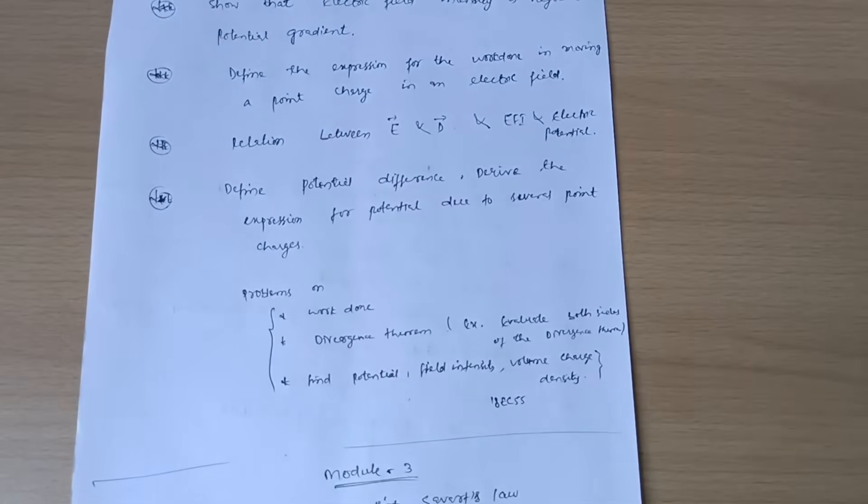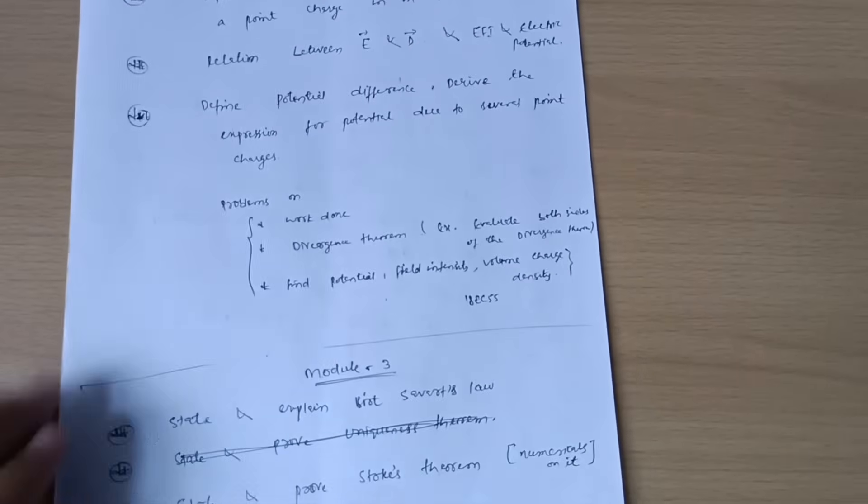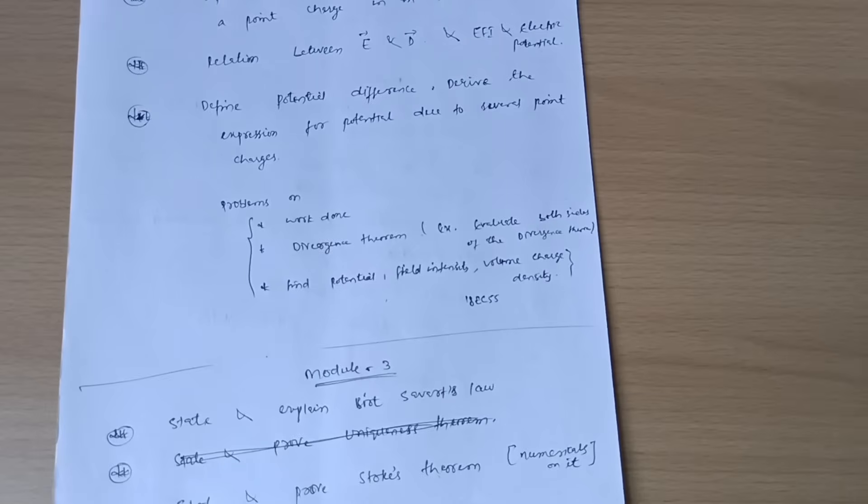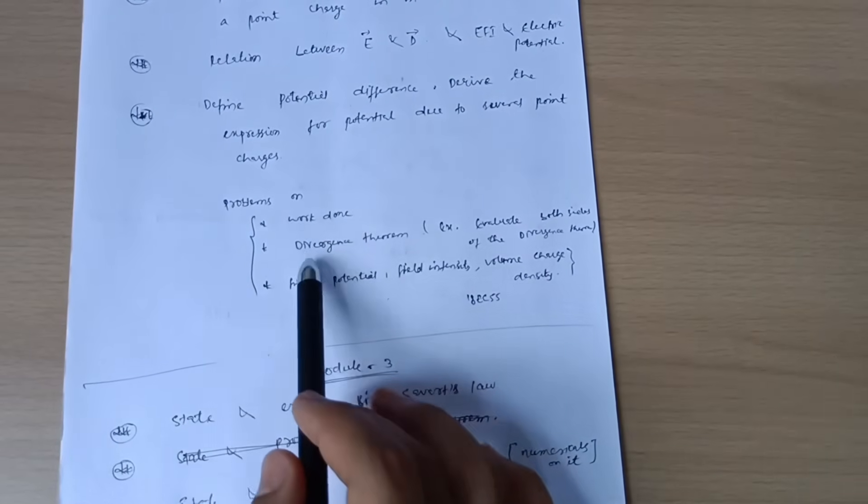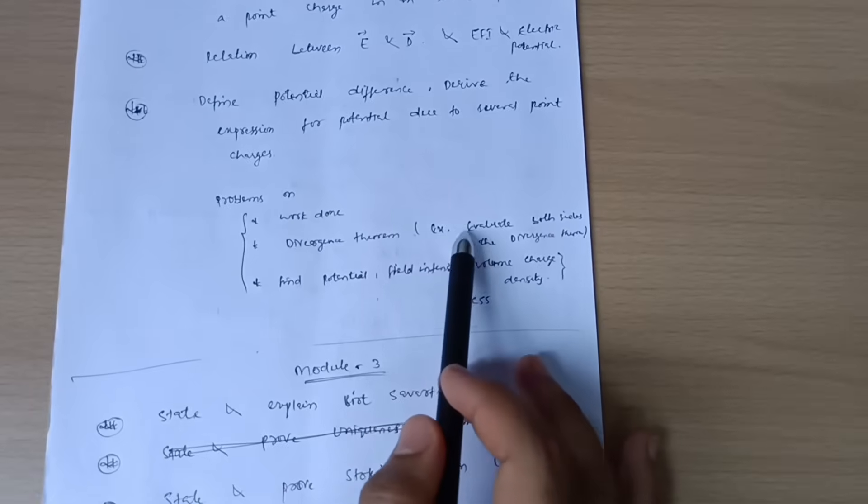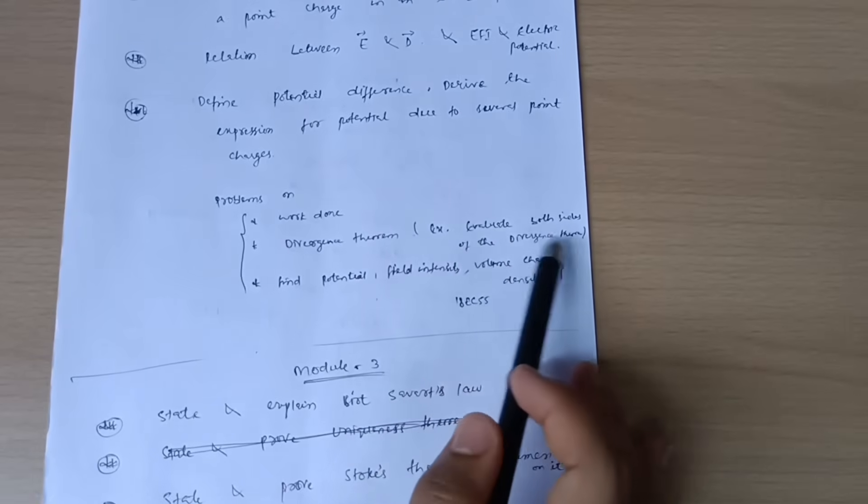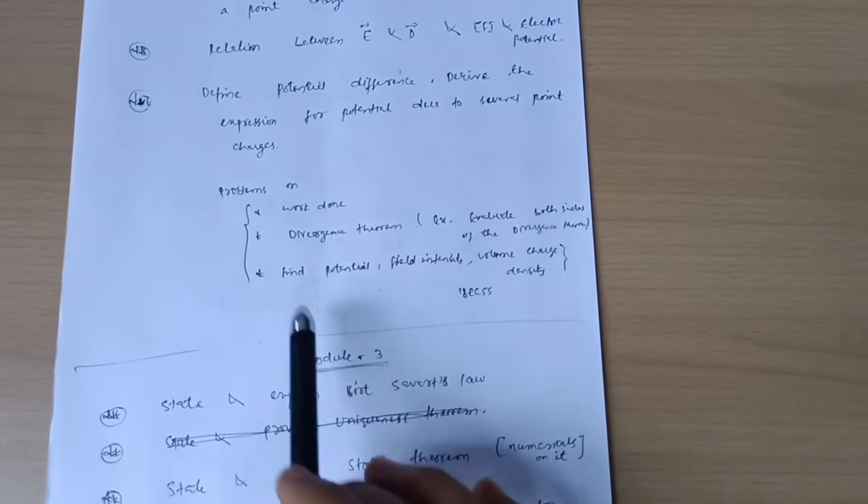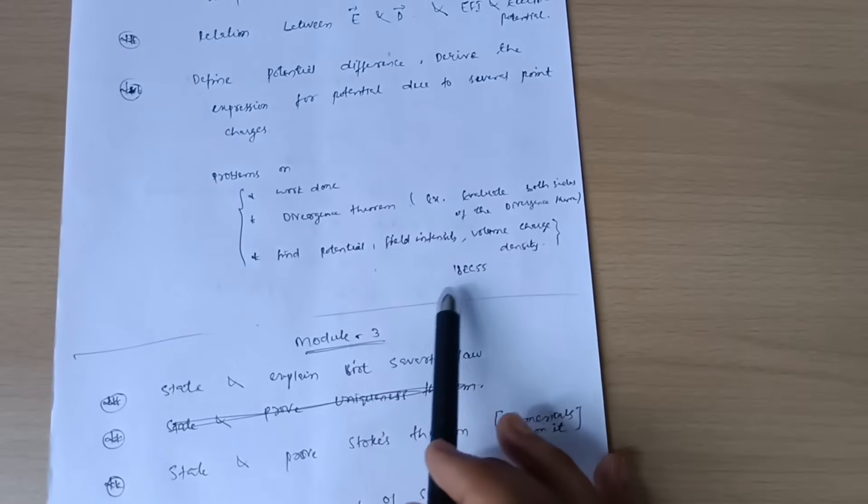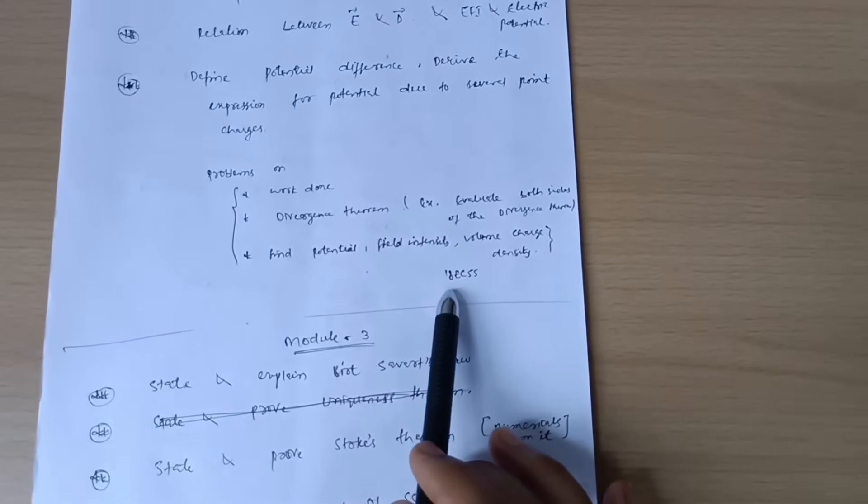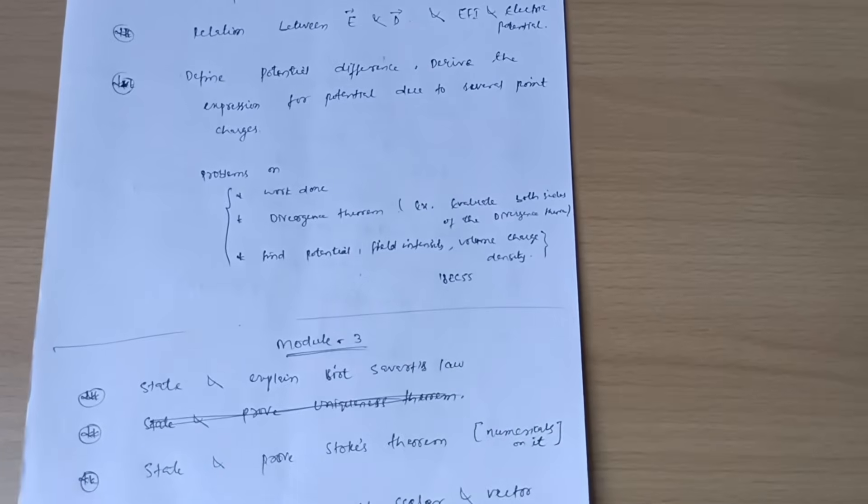If you want to score in this subject, you have to solve some problems on work done and divergence theorem. Suppose there will be questions like evaluate both sides of the divergence theorem and data will be given. Find potential and field intensity and volume charge density. Similarly, you have to refer to 18EC55 papers for practice.